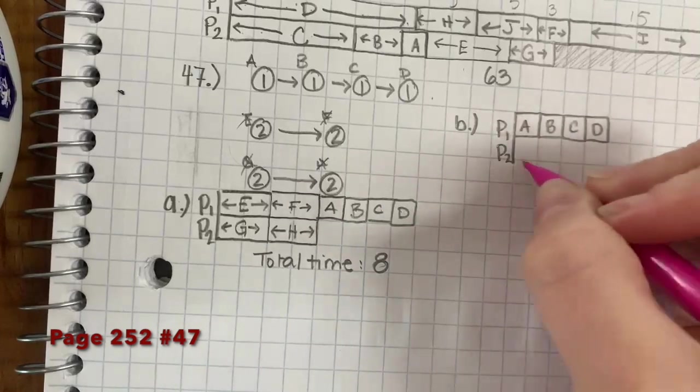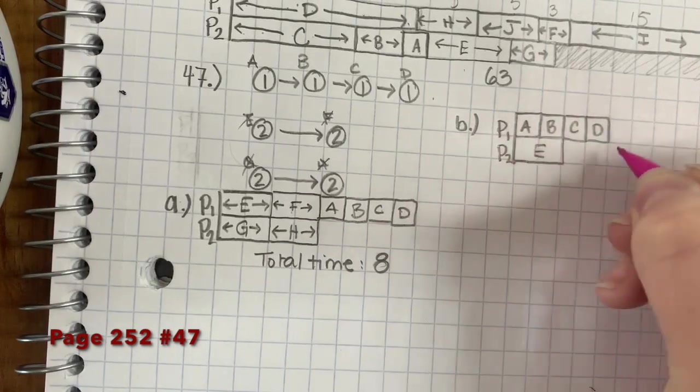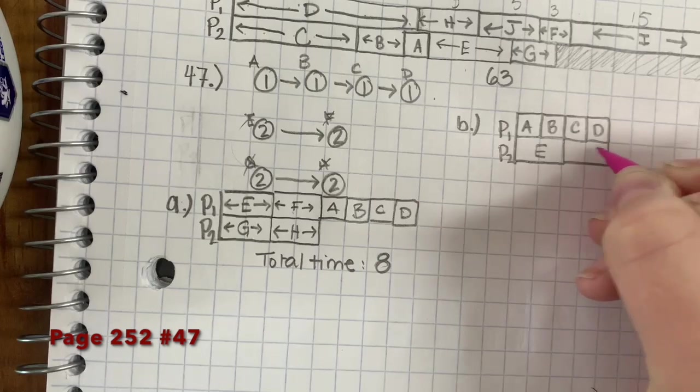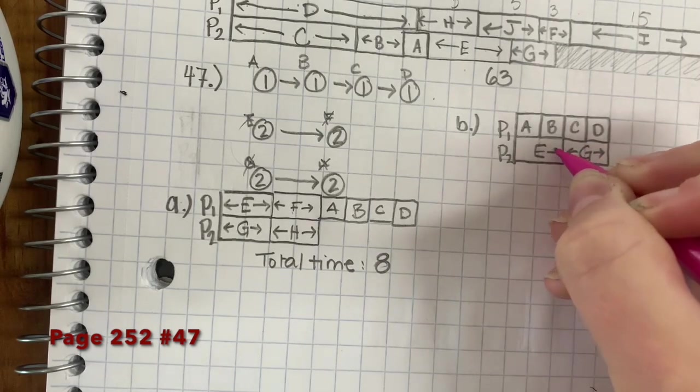And then I'm going to give E to person 2, and G to person 2. And it's taking up the same amount of time.